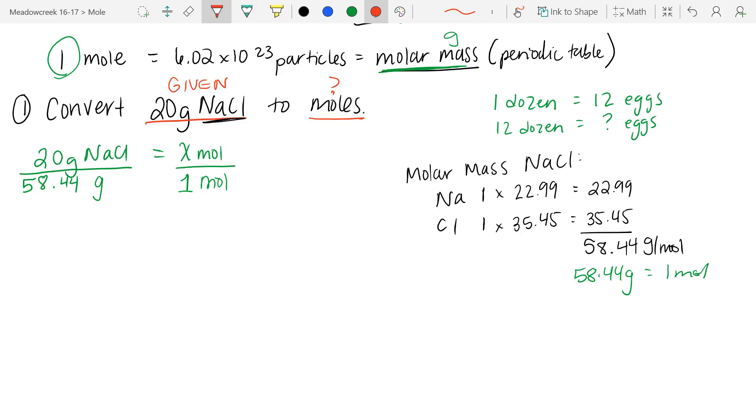how in math do we solve for x when we have fractions? Well, we cross multiply. So the first thing I'm going to cross multiply is this direction. 1 times 20 is 20, and then I carry my units to have grams, NaCl, and mole. And I'm going to put the equal sign, and I'm going to cross multiply in the other direction.